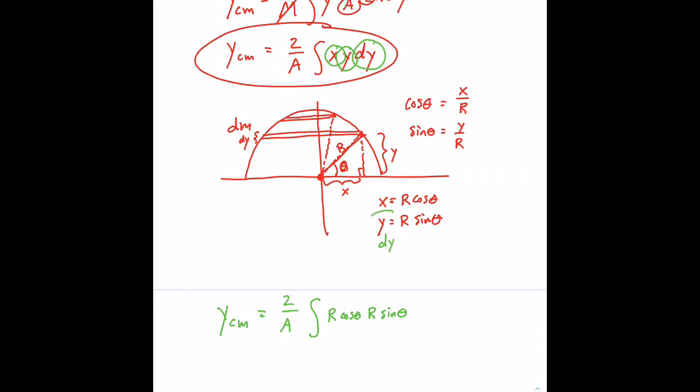Oh, and then we've got to multiply by dy. So let's figure out what dy is. If we take the derivative of this expression, if we do dy dθ, then we get r cosine theta. Or in other words, dy is equal to r cosine theta dθ.